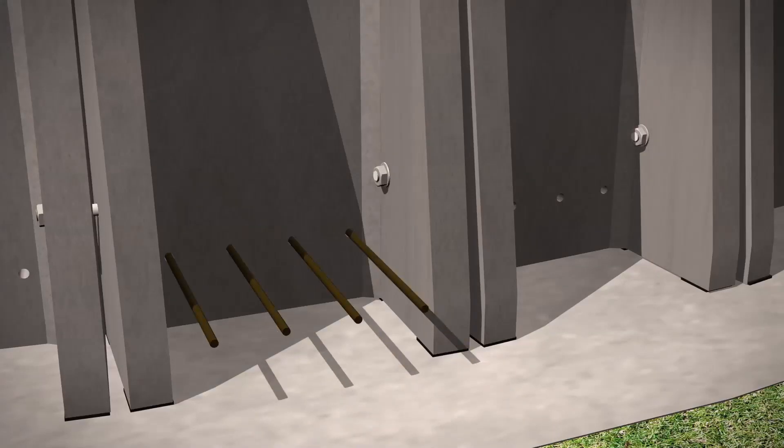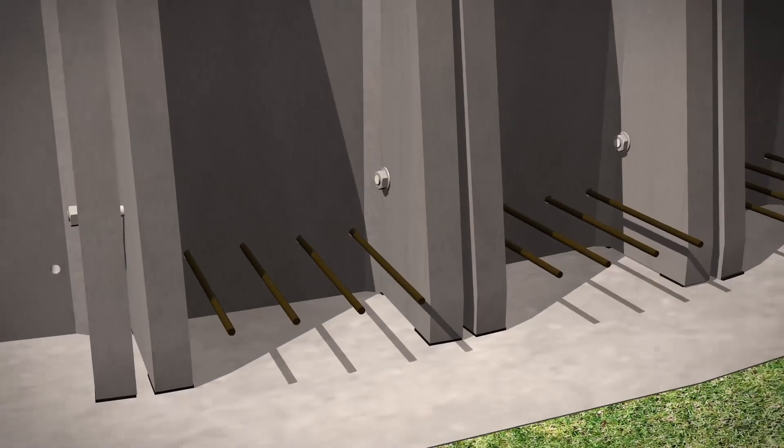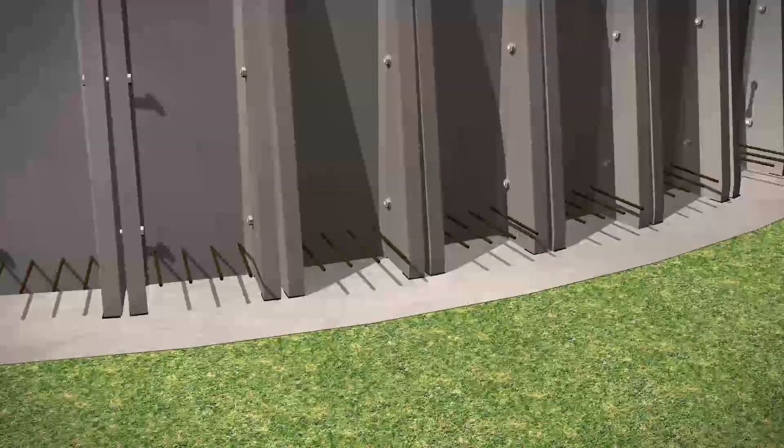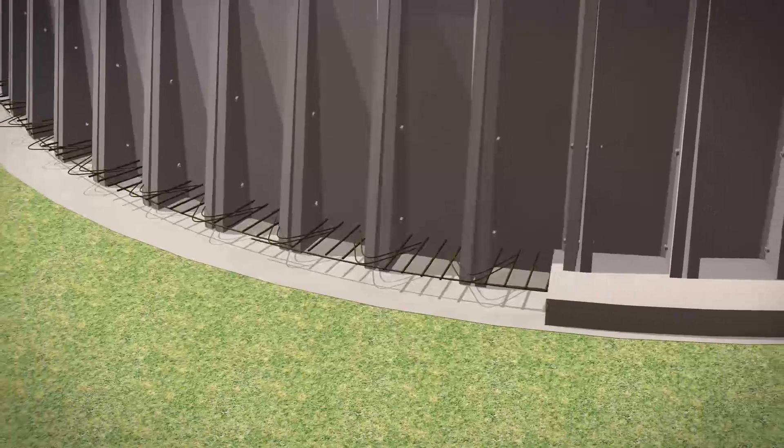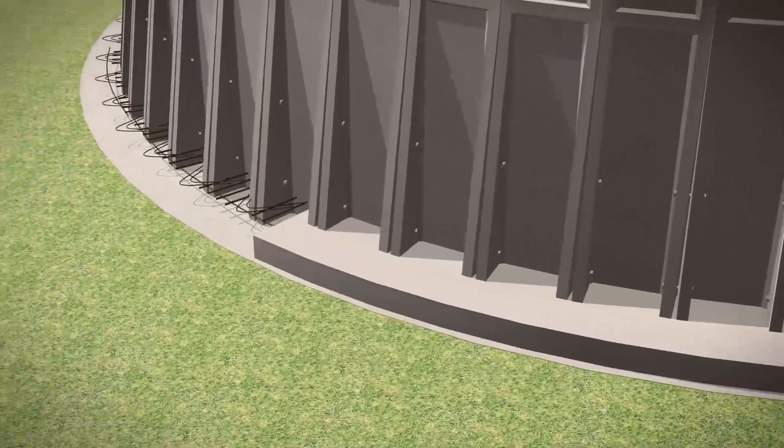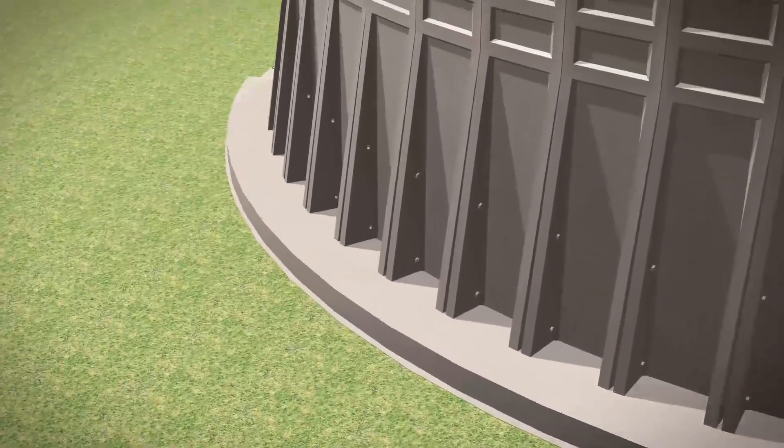Steel bar reinforcement is placed through pre-formed holes in the panel base to give continuity. These bars, along with further loose reinforcement, are then cast into an external concrete ring beam to secure the units in place.